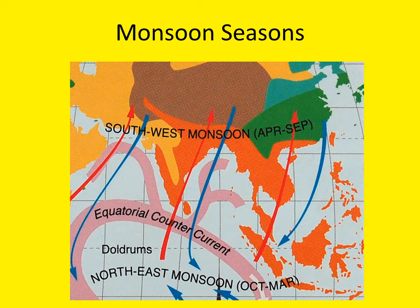The weather and climate in Vietnam are heavily influenced by the competing monsoon seasons in the region. This map shows the directions of the various monsoons. The southwest monsoon lasts from about April to September, and the northeast monsoon goes from October to early April. Southern Vietnam sees the majority of its annual precipitation between May and October, peaking around June. Northern Vietnam receives much of its rainfall from May to October, but August is typically the wettest month in the north. As a general rule, somewhere in Vietnam at any given moment it's monsoon season.